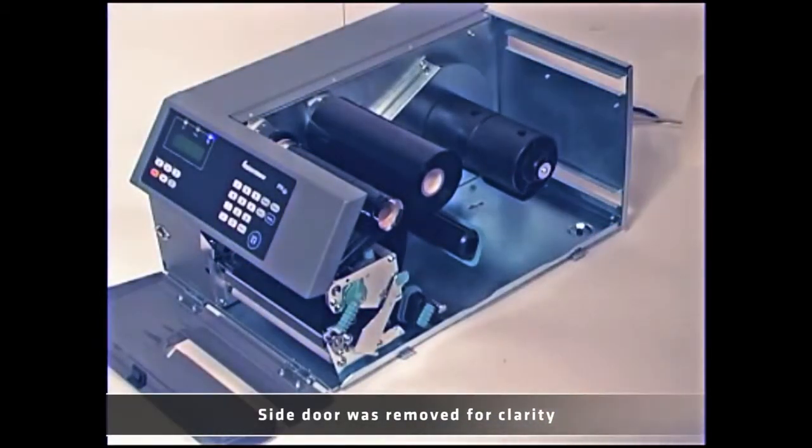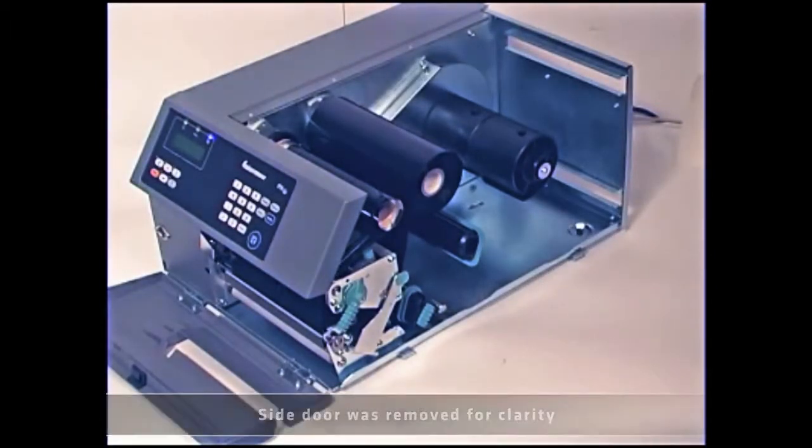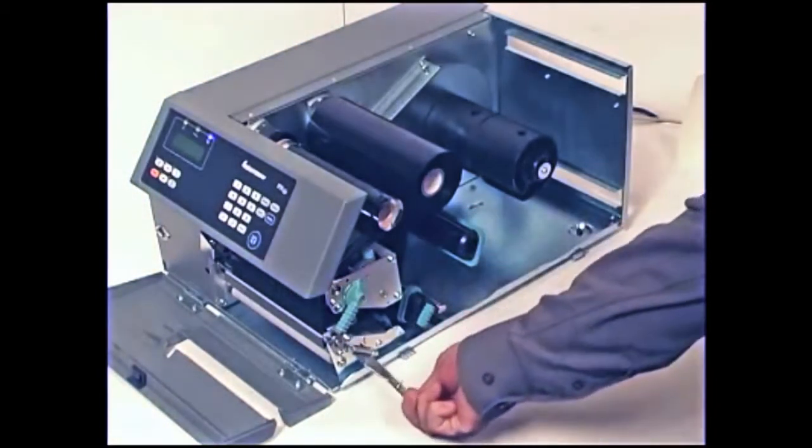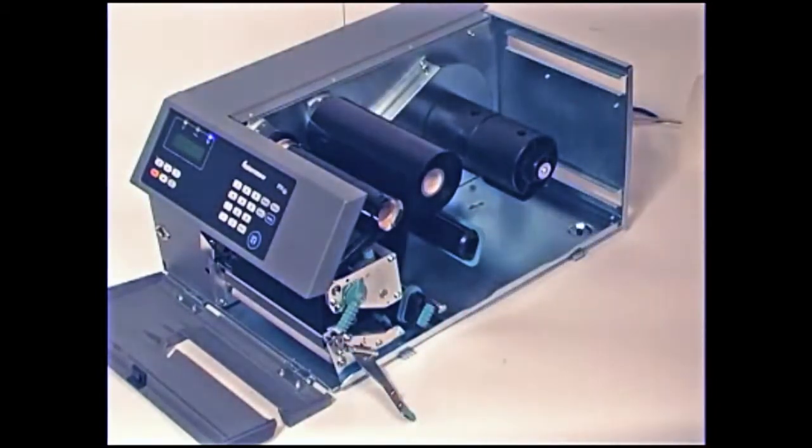Start by opening the front door and media cover. If you are installing the media on a PX6i model, you will need to pull down the locking handle. This does not apply to the PX4i or PA30 models.